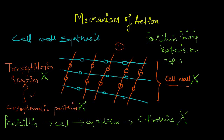As the cell wall synthesis does not happen, the cell becomes osmotically fragile. Water will enter into the cell, causing it to swell up, and eventually lysis of the cell takes place — and as a result the microbes will die. This was the mechanism of action of penicillin.